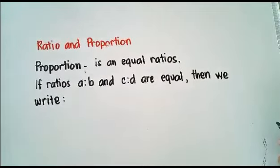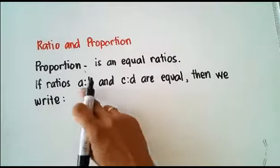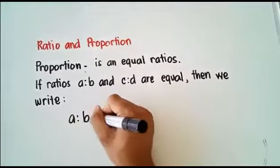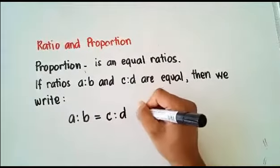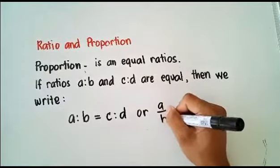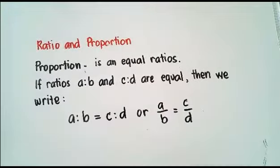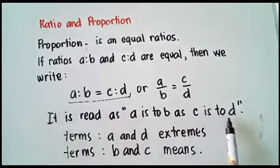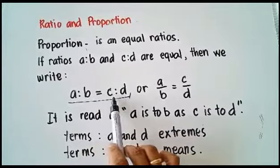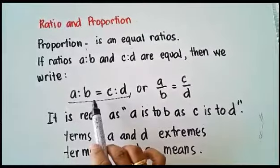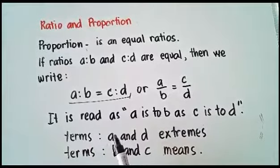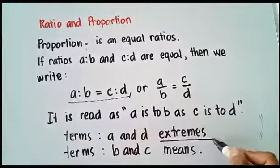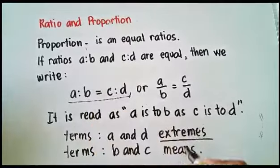Proportion is an equal ratio. If ratios A is to B and C is to D are equal, then we write A is to B is equal to C is to D, or A over B is equal to C over D. This proportion is read as 'A is to B as C is to D.' These four numbers A, B, C, and D are called terms. Terms A and D are called extremes, and terms B and C are called the means.